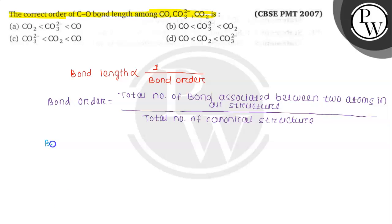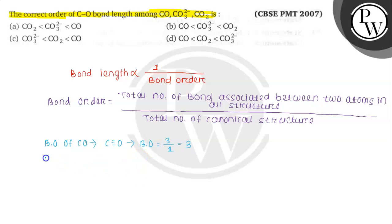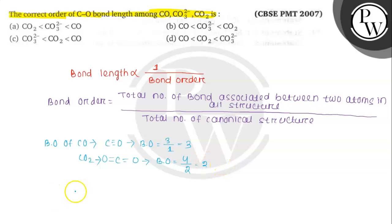First, bond order of CO. CO has a triple bond, so bond order = 3 divided by 1 = 3. Now bond order of CO₂: CO₂ has C double bond O double bond O, so total number of bonds associated is 4, divided by total number of canonical structures 2, giving bond order = 2.